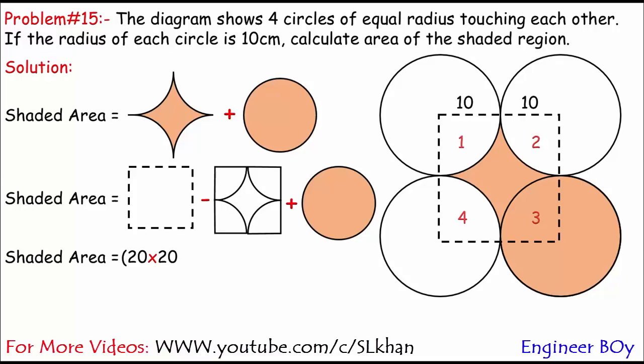So its product must be 20 times 20, right? So this is the area of the square minus four quadrants of a circle.